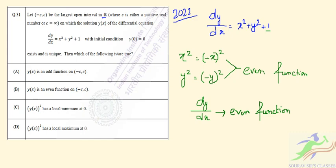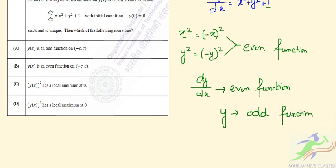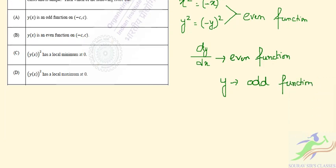Since dy/dx is an even function, y(x) will be an odd function. From options A and B, we can determine that y(x) is an odd function. Let's see how an odd function looks — it will look like this, where y(x) is an odd function.